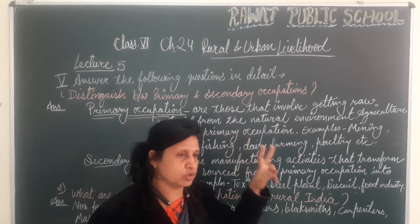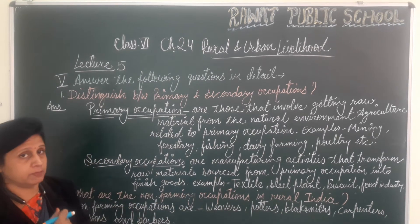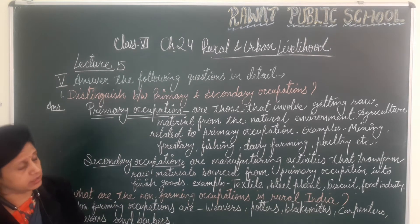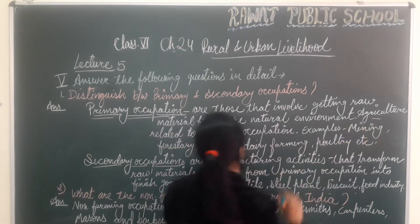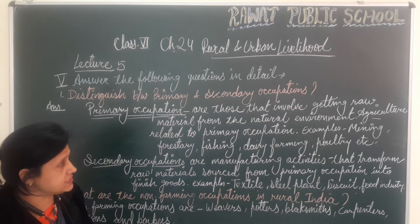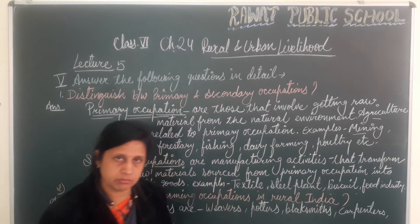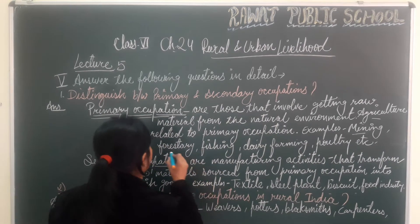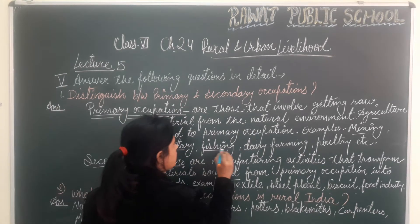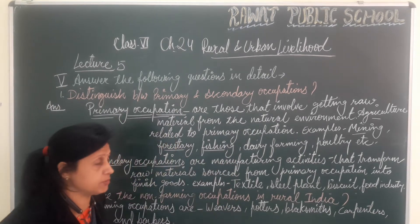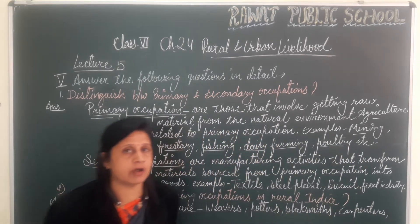Agriculture is related to the primary occupation. What are the main important primary occupations? Agriculture. And many other examples like mining — mining is extracting minerals from under the earth. Forestry, fishing, dairy farming, and tree farming — these are all primary sector occupations related to extracting from nature.